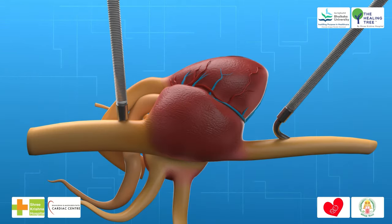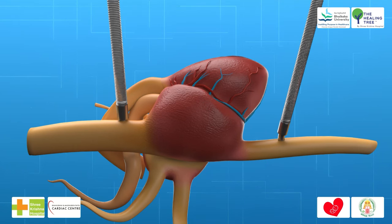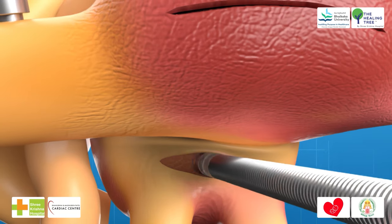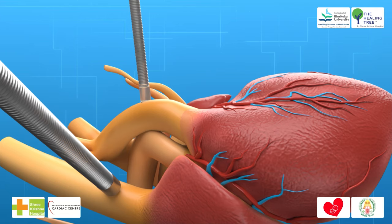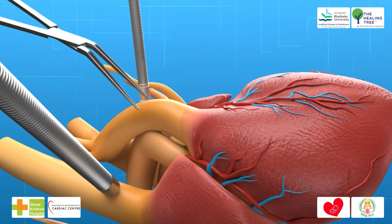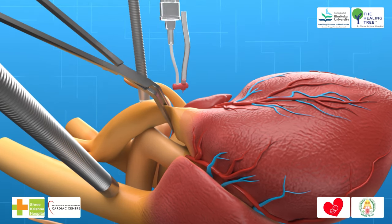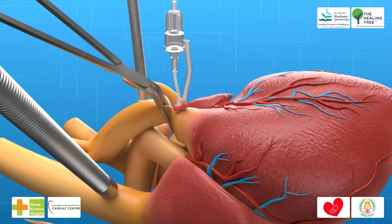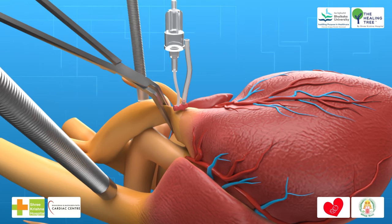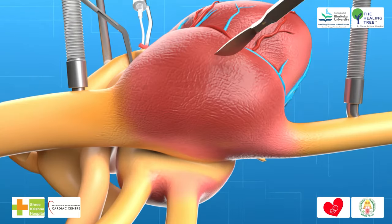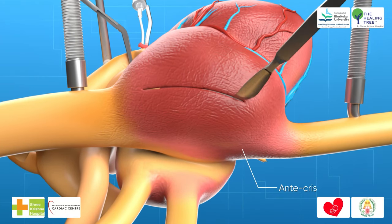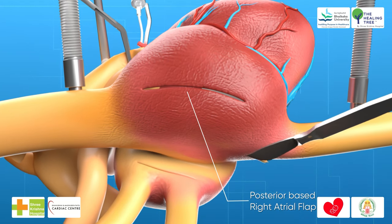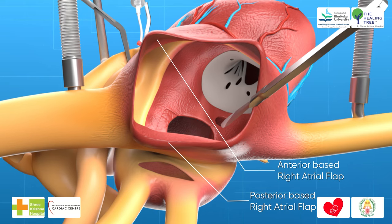Step 10: If two venous cannulae are used, a small incision is made into the left atrium and a disposable sump sucker is placed into it. Step 11: The aorta is cross-clamped and a cold cardioplegic solution — crystalloid or blood cardioplegia — is infused. Cardioplegia is repeated every 30 minutes and topical cooling with ice slush is also used. Step 12: The atrium is opened between points A and B and the vent is placed through the patent foramen ovale or atrial septal defect into the left atrium.